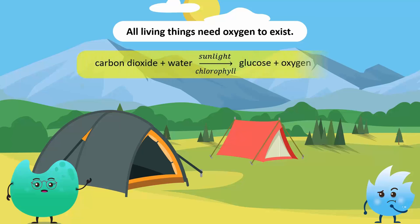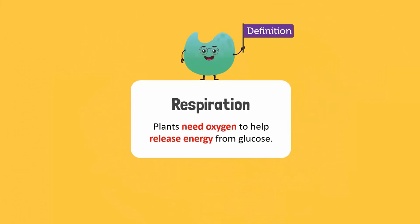I don't understand. I thought that plants only need carbon dioxide and photosynthesis so they can make their own food and release oxygen in the process. That is correct. However, after making glucose, they need oxygen to help release energy from that glucose. This process of releasing energy is called respiration.